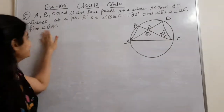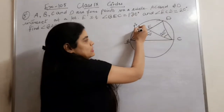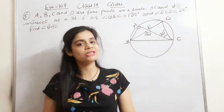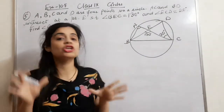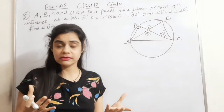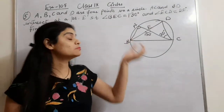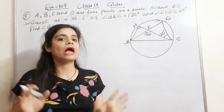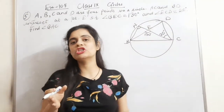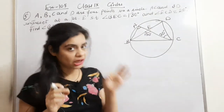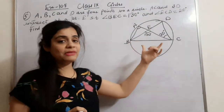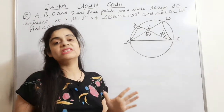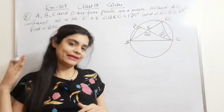We need to find angle DAC. An important note: the question does not say anything about BC passing through the center O or BC being a diameter of the circle. So I cannot use the property that the angle in a semicircle is a right angle.